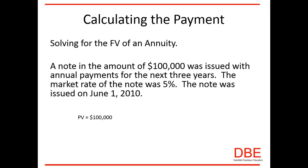What we need to calculate is the payment. Right now we're borrowing one hundred thousand dollars, the interest rate is five percent, it's compounding annually so our CY is one, and our total N is three. The future value of an installment note will always be zero — the carrying value starts at one hundred thousand and as we make payments it works its way down to zero. Now we solve for the payment.